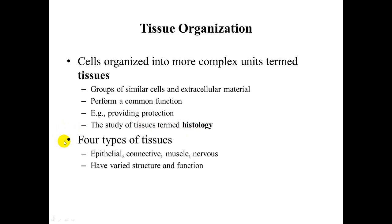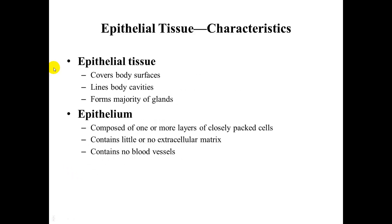There are four types of tissues: epithelial, connective, muscle, and nervous. Each are varied in structure and function. Characteristics of epithelial tissue include that it covers body surfaces, lines body cavities, and forms the majority of glands.